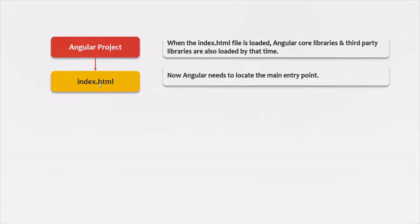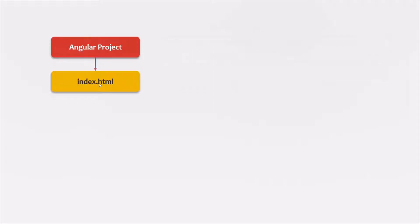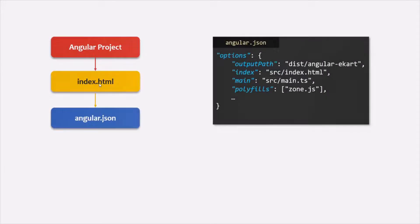Now Angular needs to locate the entry point of our Angular application. In many programming languages, we have the concept of an entry point where the main method is the main entry point of any application — we have the same concept in Angular. Angular searches the angular.json file, where there is an option called 'main', assigned with the file path of the TypeScript file which is the main entry point of the Angular application.